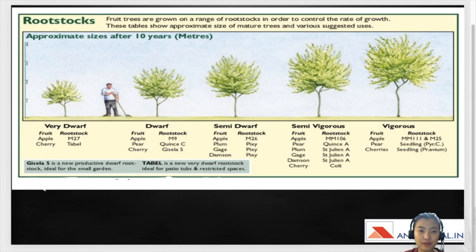In this slide I've shown some of the rootstocks, a few trees. This is on the basis of size of the tree after 10 years. For the very dwarf for apple we have M27. And for cherry we have Tabel. Tabel is a new dwarf variety which is ideal for patios and restricted spaces. For the dwarf variety, for apple we have M9. This is one of the most common rootstocks and it's susceptible to fire blight and fur knots. For pear we have Quince and the cherry dwarf variety is Gisela 5. Gisela is also a new productive dwarf rootstock which is ideal for small garden.